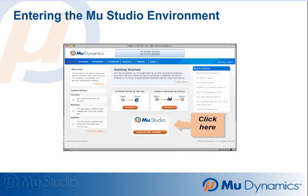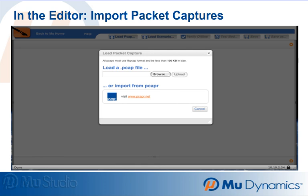Now anyone can perform robustness testing on implementations of cutting-edge or emerging protocols. Even proprietary protocols or custom extensions are now testable. From within Mu Studio, customers either import and edit packet captures from PCAPR.net or their own local packet capture library. In this example,